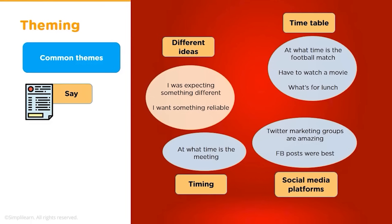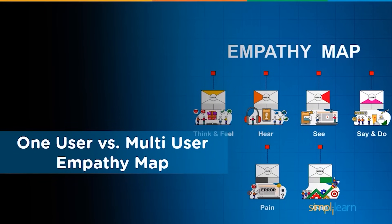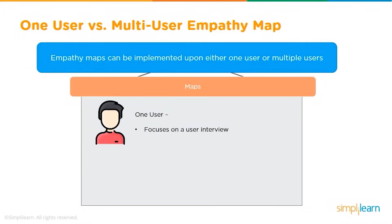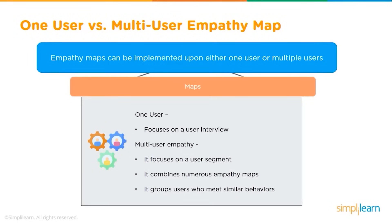Once you complete interviewing clients and create themes, you will know which questions to focus on. Empathy maps can be applied to one user or multiple users. Individual mapping focuses on a user interview or a user's log such as a diary study, where the designer completely observes a single user to understand the problem. Aggregated empathy maps focus on a user segment rather than a single person — combining numerous empathy maps from users who share similar behaviors into one segment.